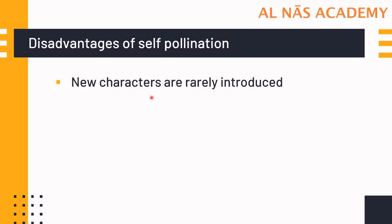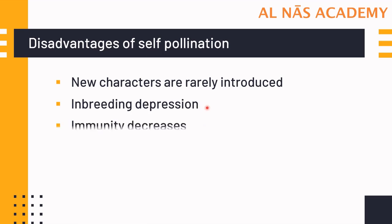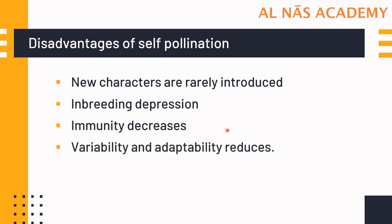The disadvantages of self-pollination: new characters are rarely introduced, which results in inbreeding depression — the vitality of these races decreases due to prolonged self-pollination. As a result, immunity to diseases also decreases, and there is no variability and adaptability to changes in the environment.